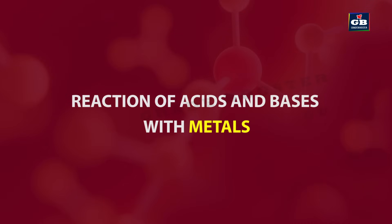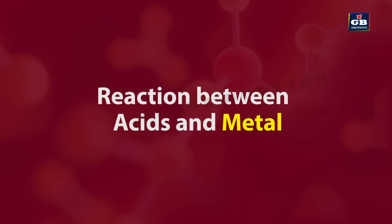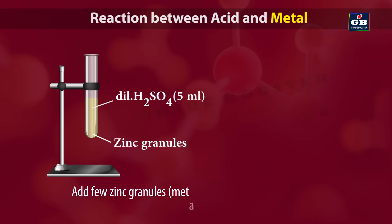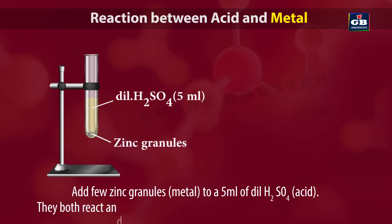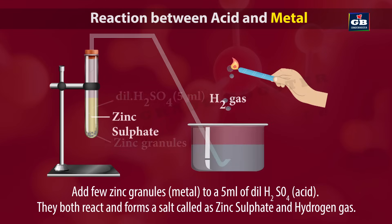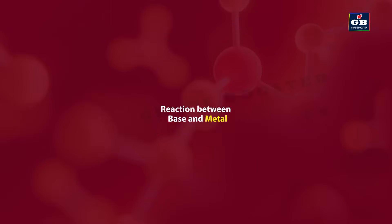Reaction of acids and bases with metals. Let us see the reaction between an acid and a metal. Add few zinc granules to 5 ml of dilute H2SO4. They both react and form a salt called zinc sulfate and hydrogen gas. So: acid plus metal gives rise to salt plus hydrogen gas.